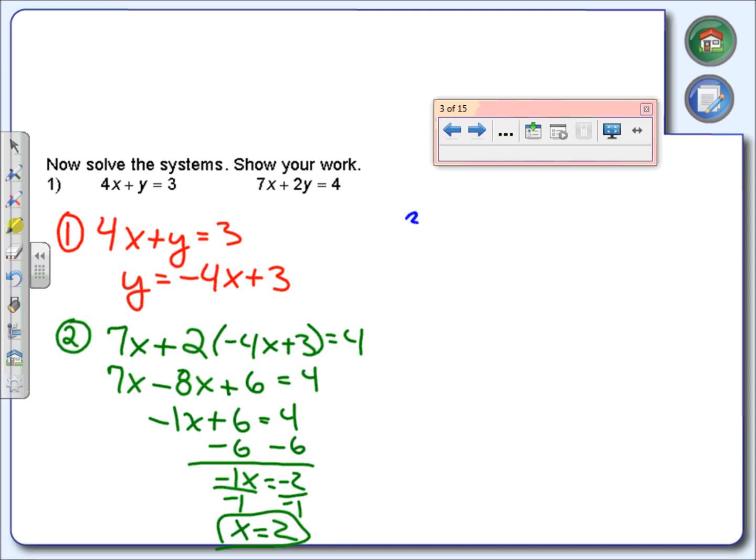We're almost there. We still need to figure out what y is. We're going to take this 2 that we just found and plug it in for one of these x's. You can use the first equation or the second. I'm going to use the first. There it is with 2 plugged in for the x in the first equation. Solve for the y. 4 times 2 is 8. Subtract 8, and 3 minus 8 gives me negative 5. So my y value is negative 5.